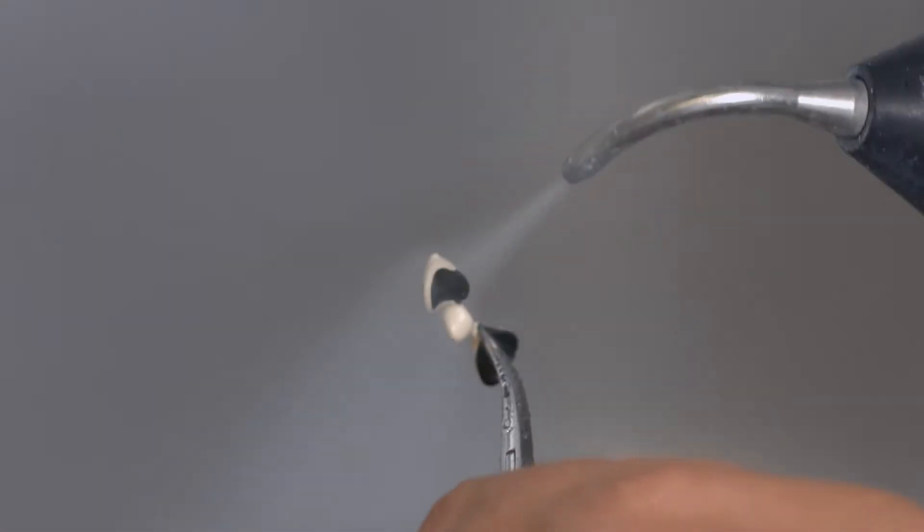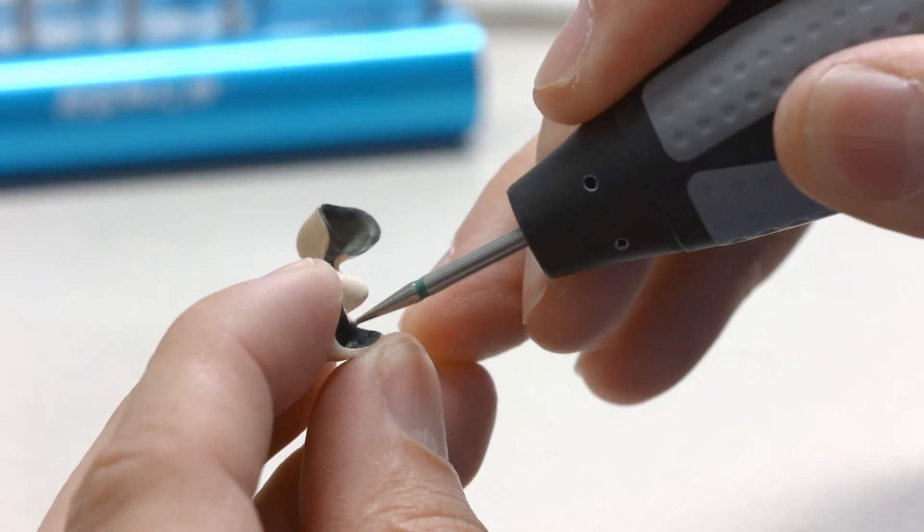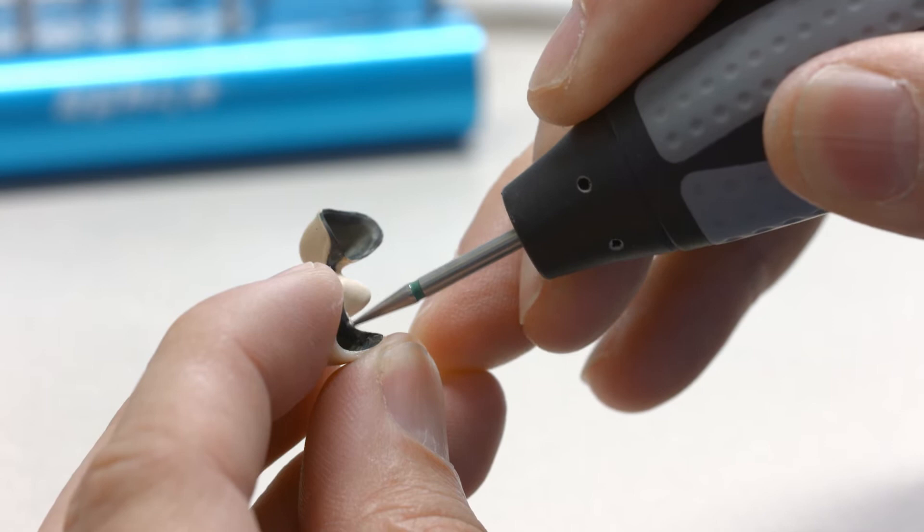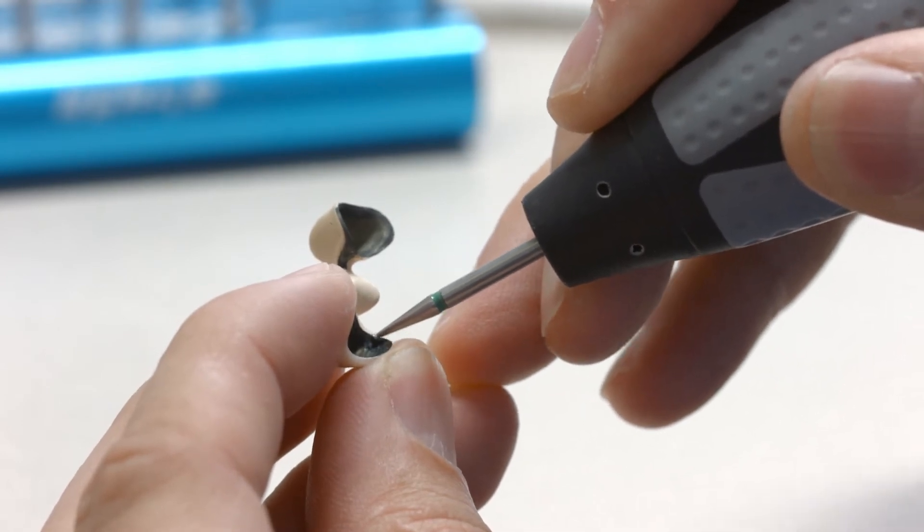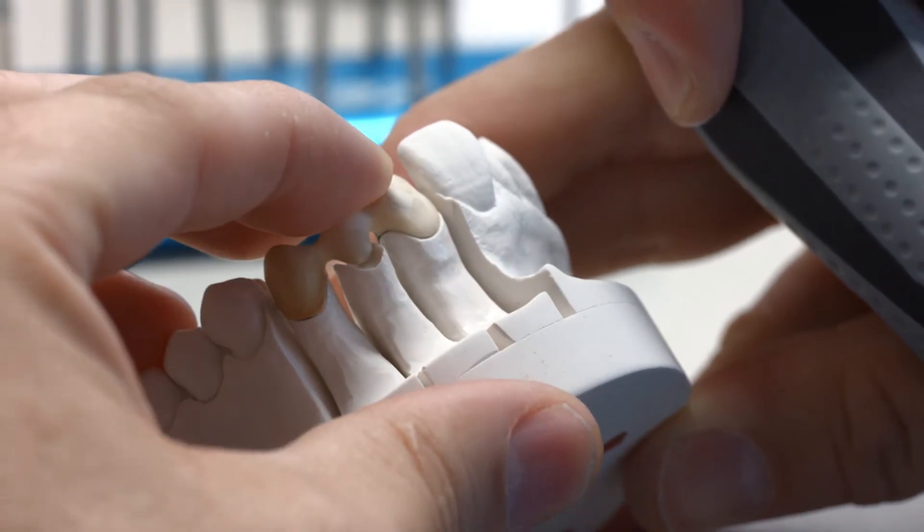Once the framework is clean, you may continue with the application of the ceramic. Adjust the margin on the die by grinding and remove any imperfections. You can further optimize the fit of the margin in a second margin firing process.